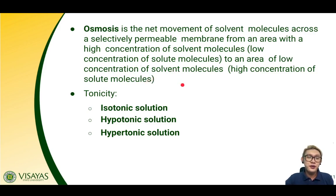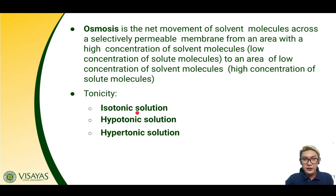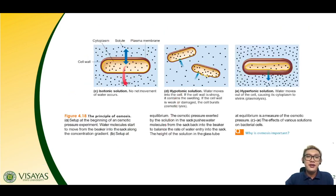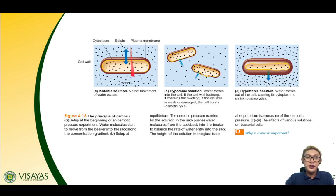With that, we refer to different tonicities — three tonicities that refer to the concentration of solute outside the cell: isotonic, hypotonic, and hypertonic. In an isotonic solution, there is equal concentration of solute inside and outside the cell. Since they are equal, the amount of water going out and the water coming in is equal.